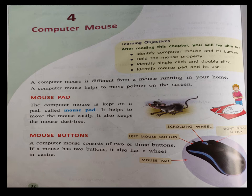A computer mouse is different from a mouse running in your home. A computer mouse helps to move the pointer on the screen. So a computer mouse is not the same as the animal — it is used to move the pointer that you see on the screen.